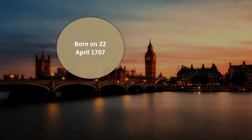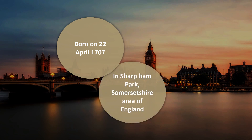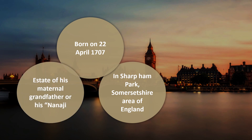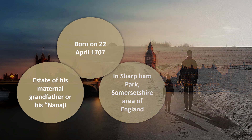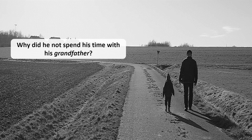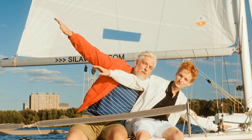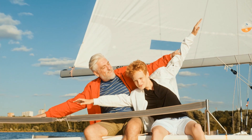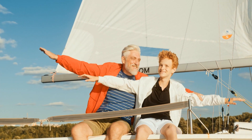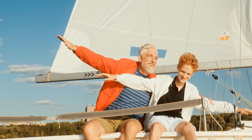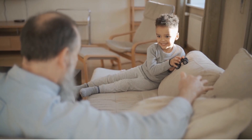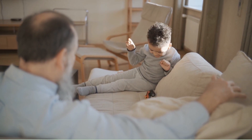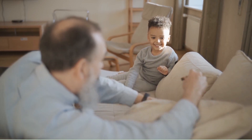Henry Fielding was born in April 1707 at Sharpham Park, Somerset. He was born on the estate of his maternal grandfather. Maternal grandfathers give a lot of affection to children, and he must have been given all the freedom and liberty to go wherever he liked, read whatever he had to, or even write. There is a kind of indulgence one enjoys in the company of grandfathers generally, and maternal grandfathers particularly. Fielding was nurtured by his maternal grandfather in a corner of England.